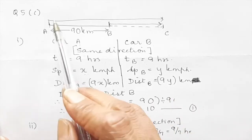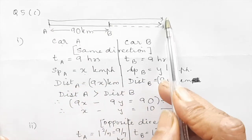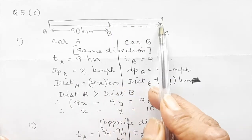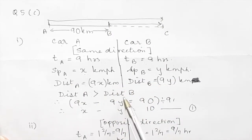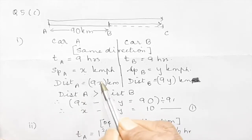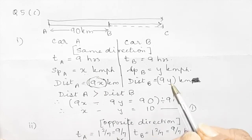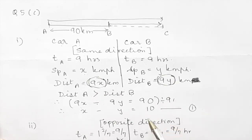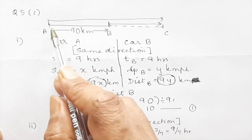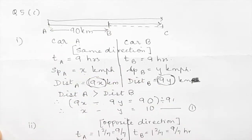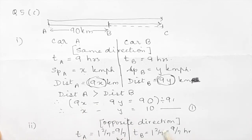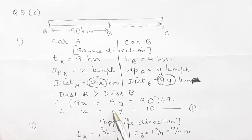The distance for the car from B is 9y kilometers. Car A travels more distance than car B, so distance A minus distance B equals the distance AB which is 90. Since 9 is a common factor, divide through by 9, giving us x minus y equals 10. That is equation 1.